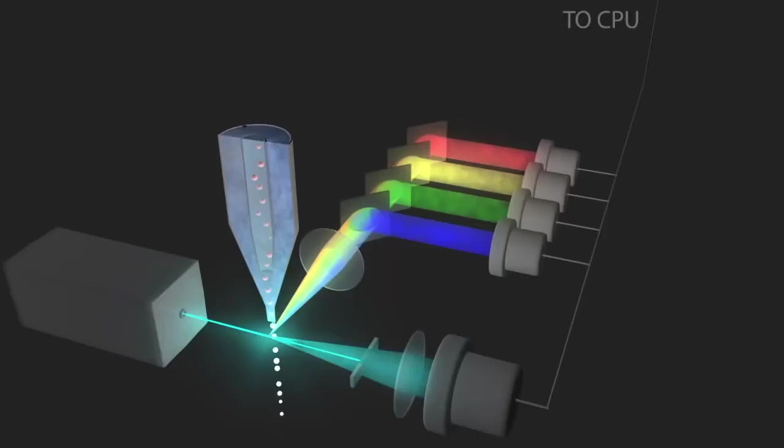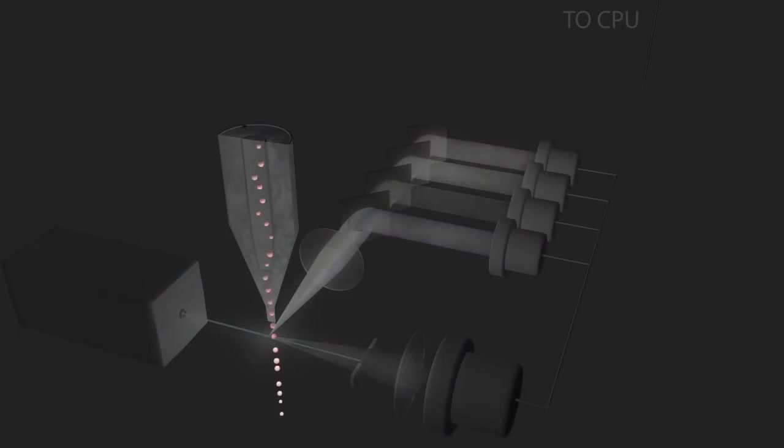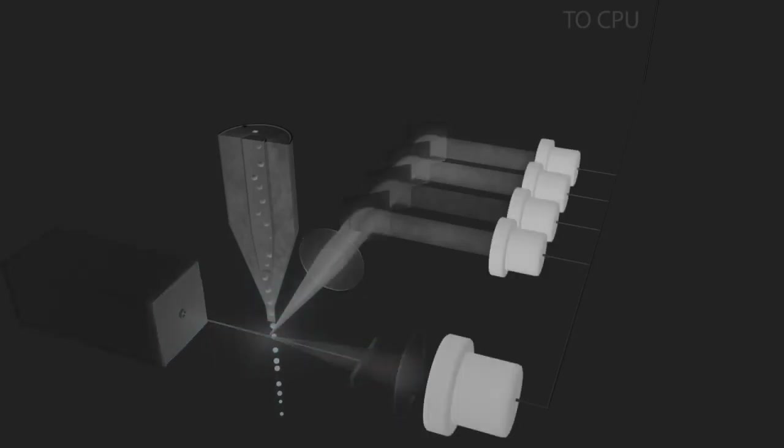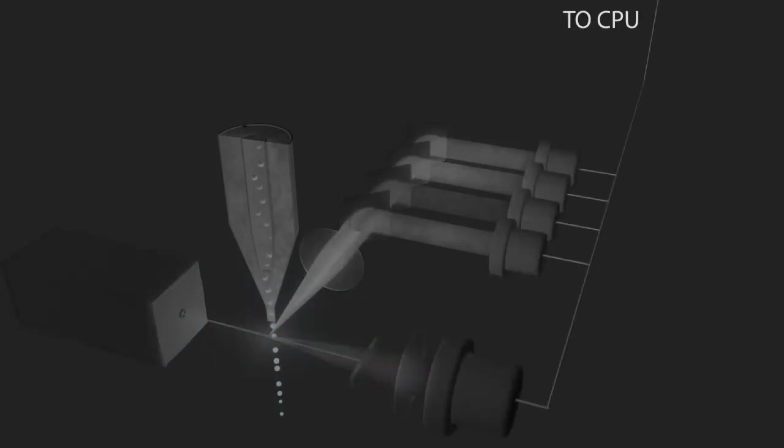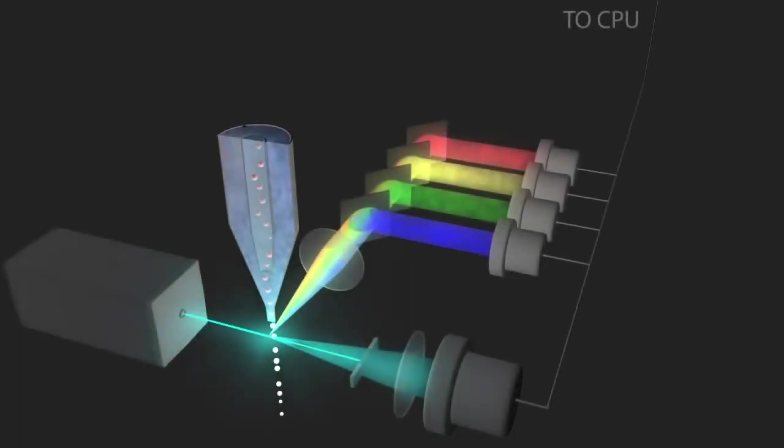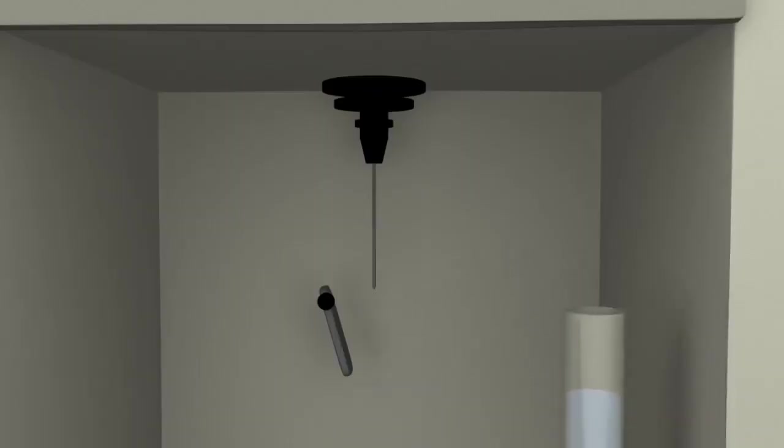A flow cytometer contains several key components, including the sample, fluidics that move the sample into the flow cytometer, lasers, optics which gather the light, detectors to sense the light, and a computer system to output the data into a form that can be analyzed by the researcher.